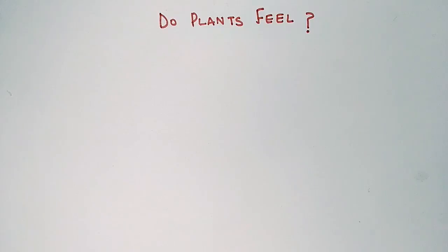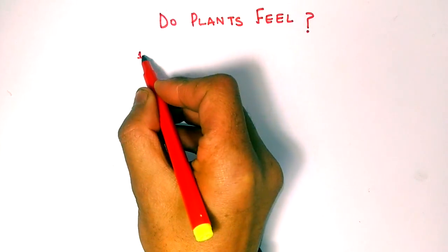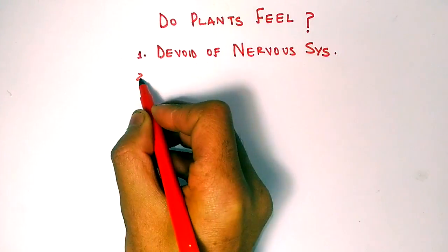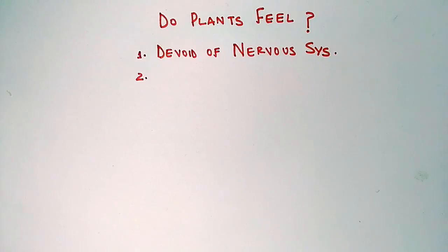First of all, we see what plants have and what they haven't. Plants are devoid of any nervous system—they do not have any nervous system like we do. Second thing is sensory organs.